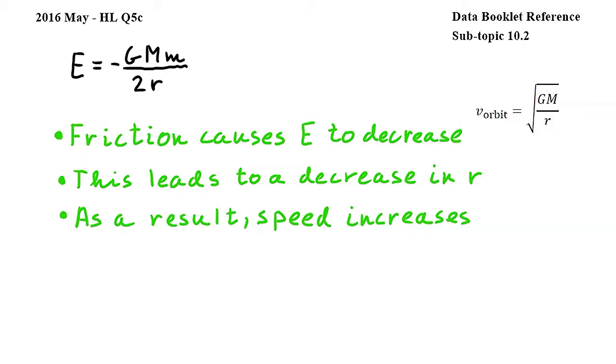Since R is in the denominator, the orbital speed will increase. So, we can conclude that the speed of the probe increases.